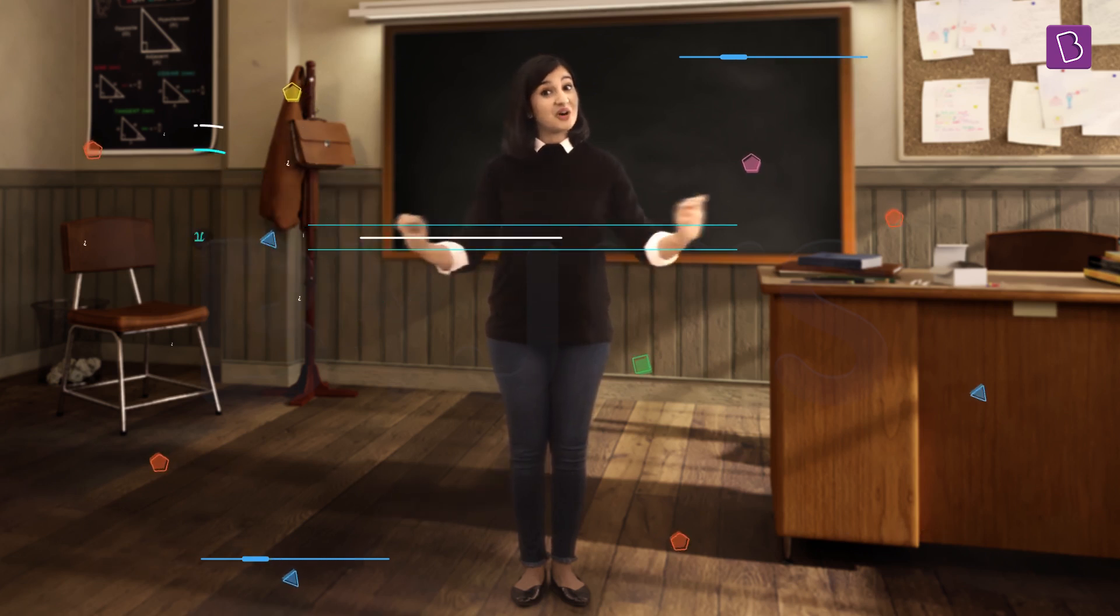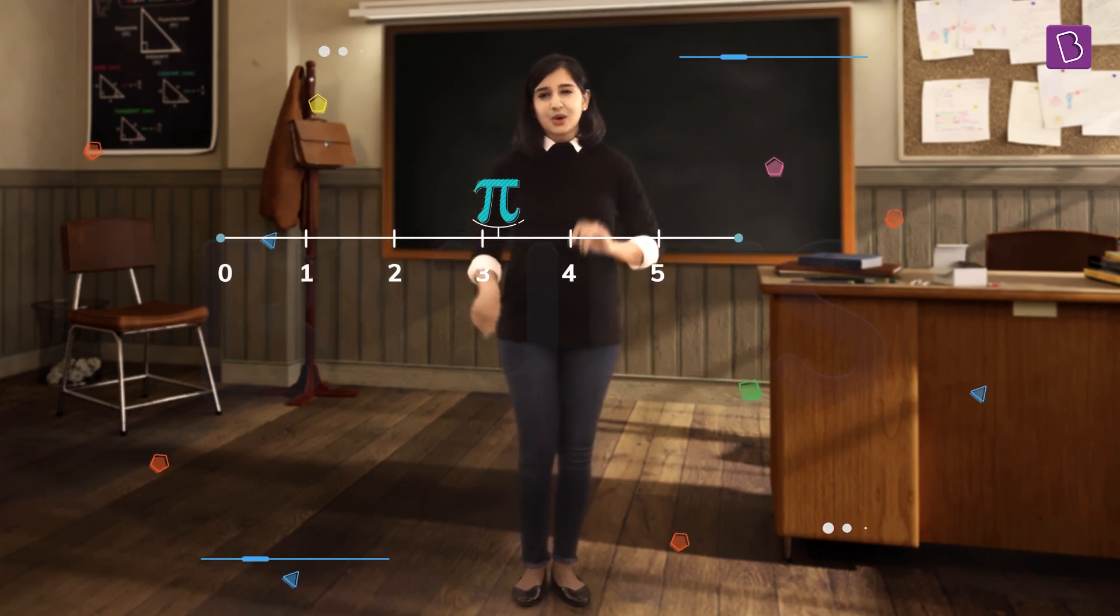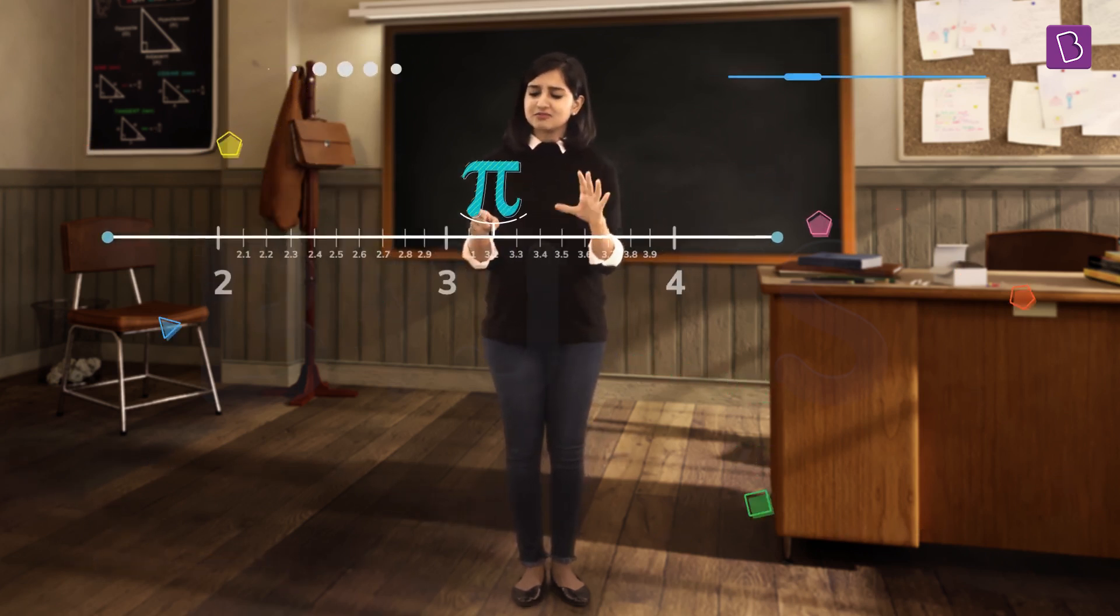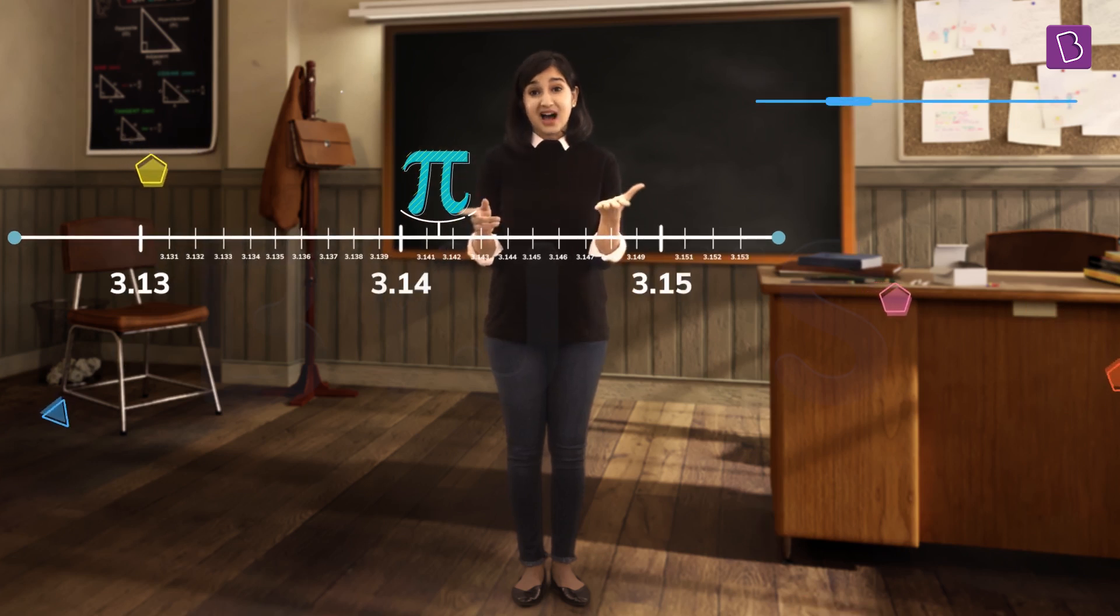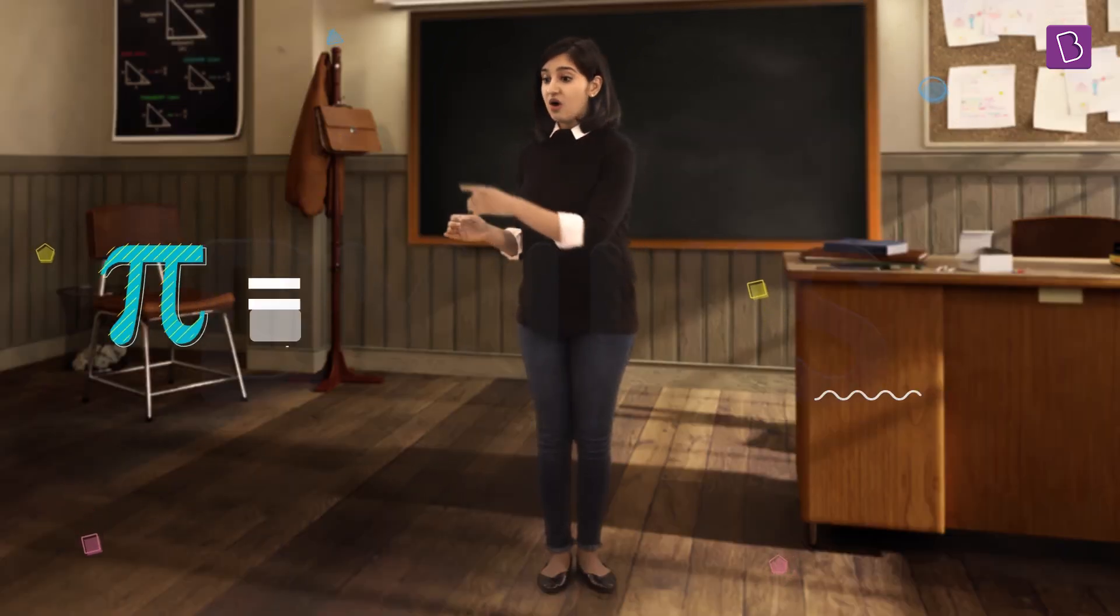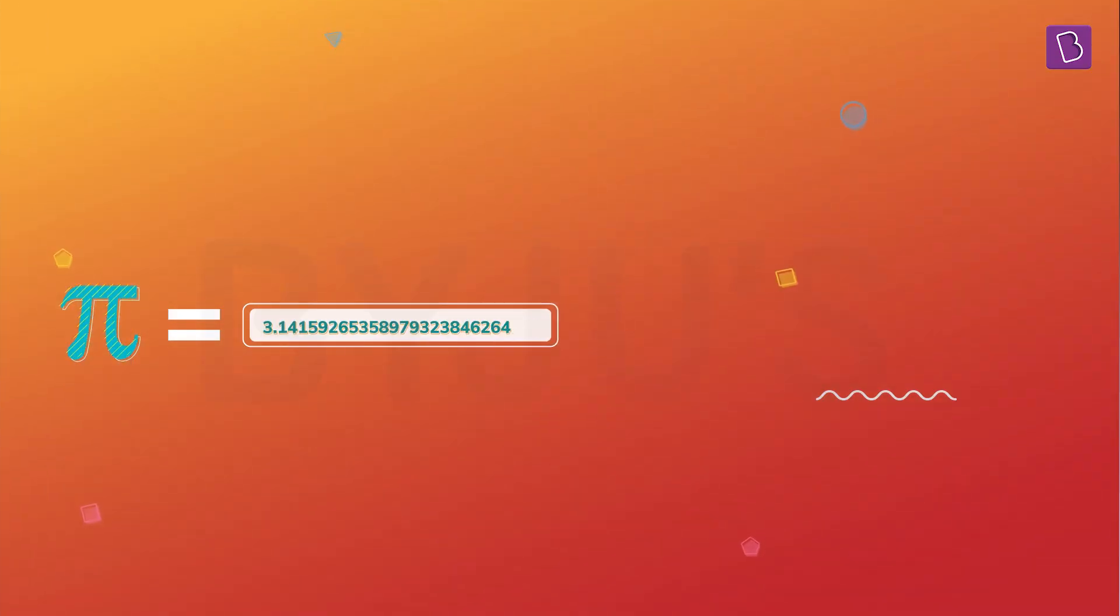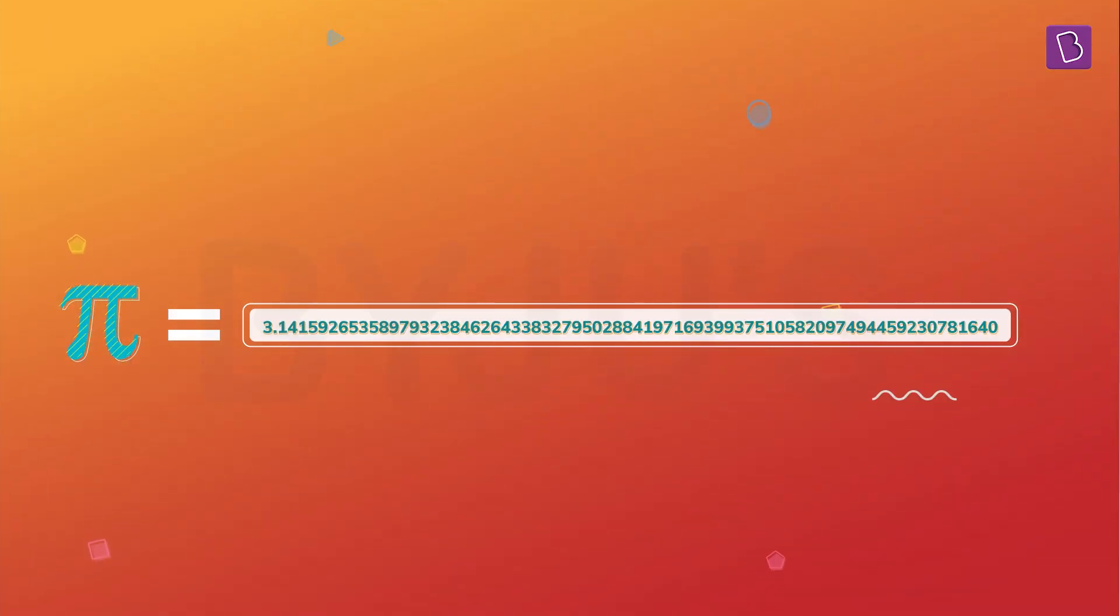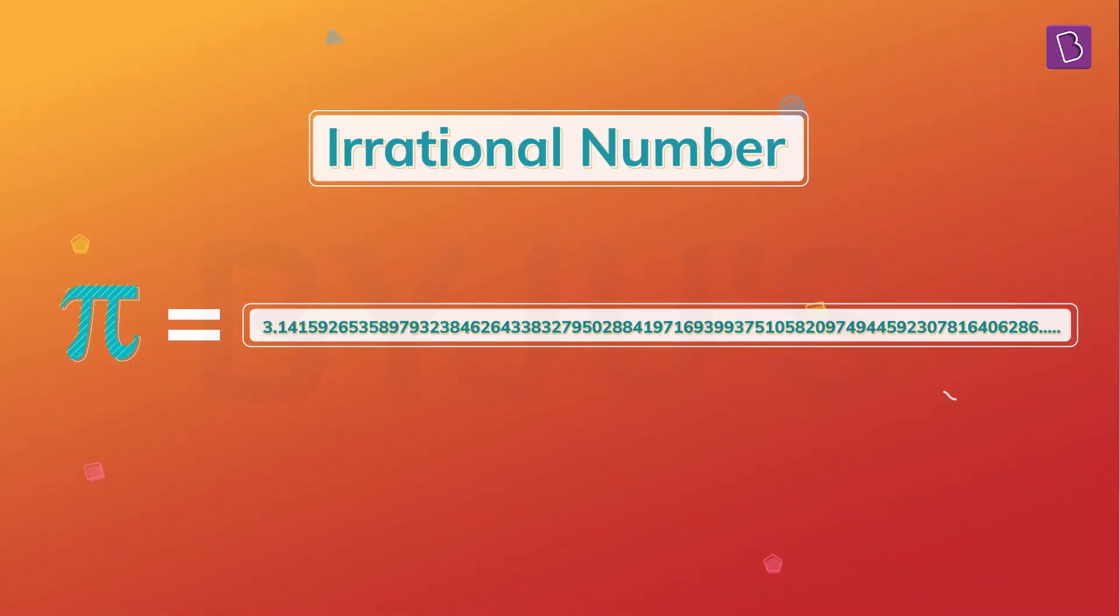You see, we can never exactly find the position of pi on a number line. We can get close, but however close we get, we will always be a little bit off from the actual value of pi. That's because the digits of pi go on forever, making pi an irrational number.